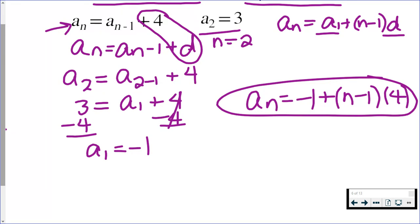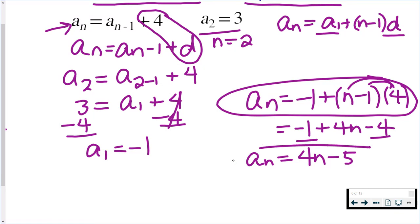If we don't simplify it, we can leave it like that. If we need to simplify it, distribute the four and then combine like terms. So there's your explicit formula.